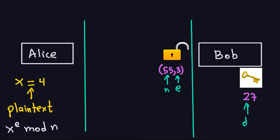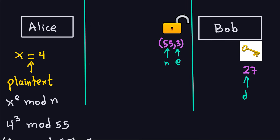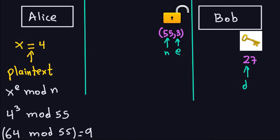I'm going to work through an example of how this works. The plaintext is x = 4, and we're going to send the ciphertext. Alice computes the ciphertext by taking the plaintext to the power e, then taking the remainder when divided by n. So that's 4 to the 3rd power, because e is the public exponent 3, and we take modulo 55 because n is 55.